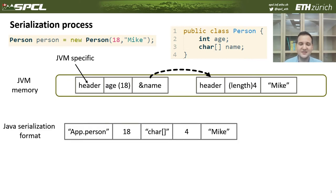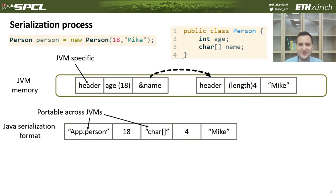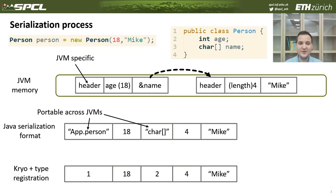So what do serialization libraries do? They extract all the meaningful information and convert it to a portable byte stream. In the case of Java serialization format, it would include the name of the class. Kryo could also perform additional optimizations — it could perform type registration, so we could replace the names of the class with just a single integer.